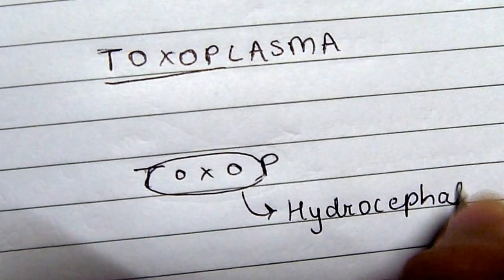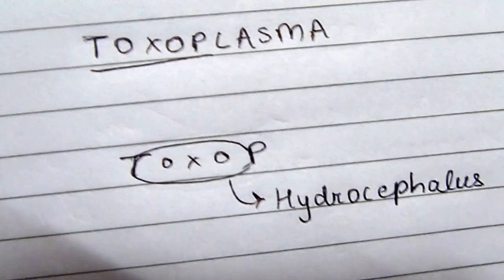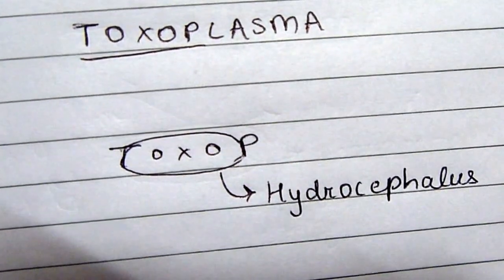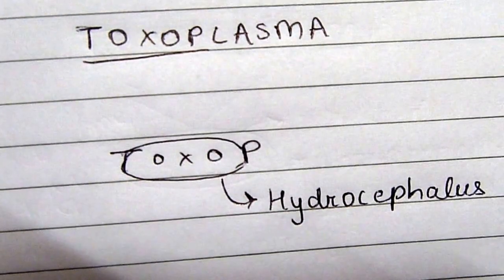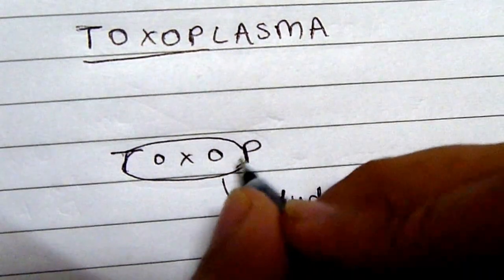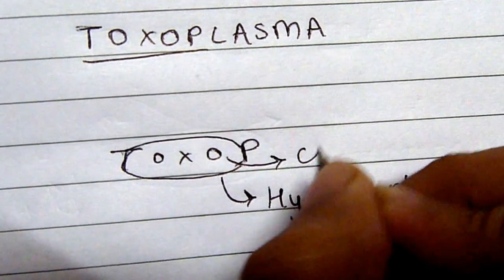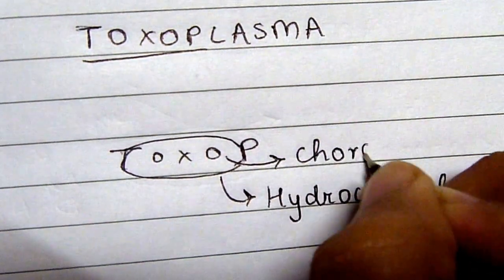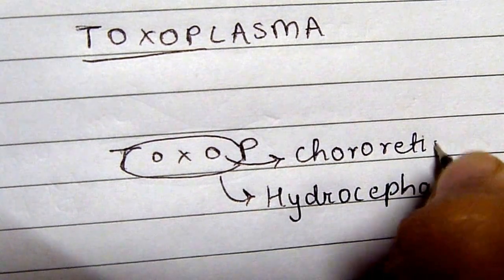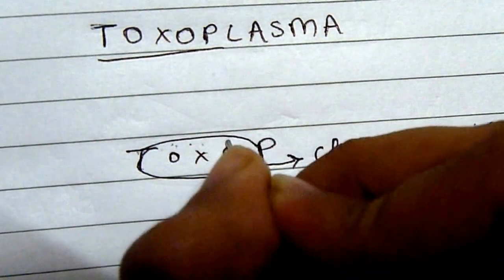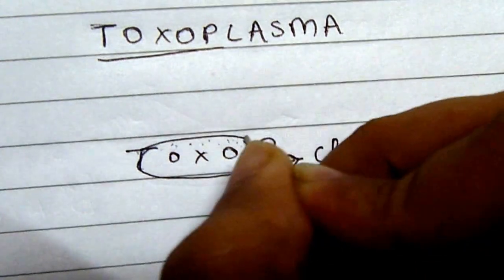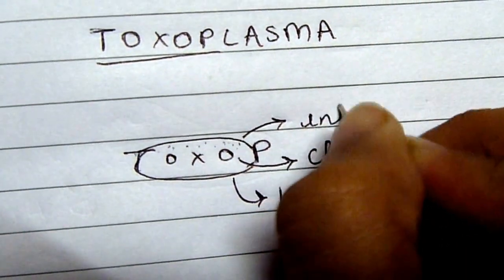Because usually the fontanels are not closed in babies, and that's why they have a huge head. That is a presenting sign of hydrocephalus. The eyes remind you of chorioretinitis, and you can draw small tiny hair of the baby for intracranial calcifications.